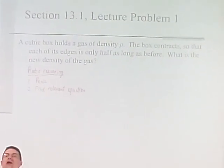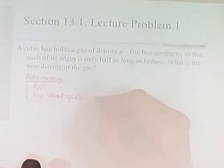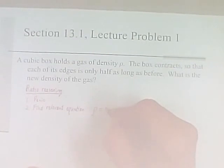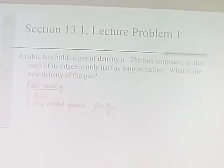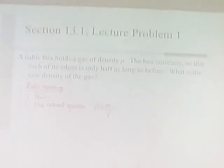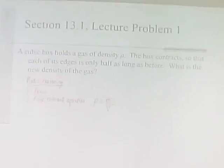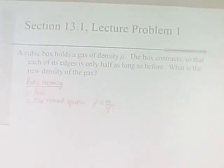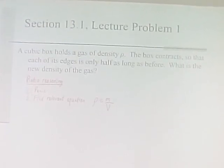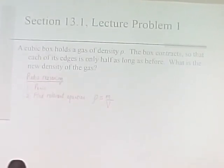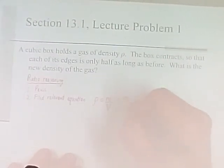We all know what the relevant equation is — we only have one equation at this point in the semester. It's rho equals mass divided by volume. However, we want to specialize it to the case of a cubic box. Let's call the length of each edge L. If it's cubic with edge length L, the volume of the box is L cubed. So let's replace this with M divided by L cubed.